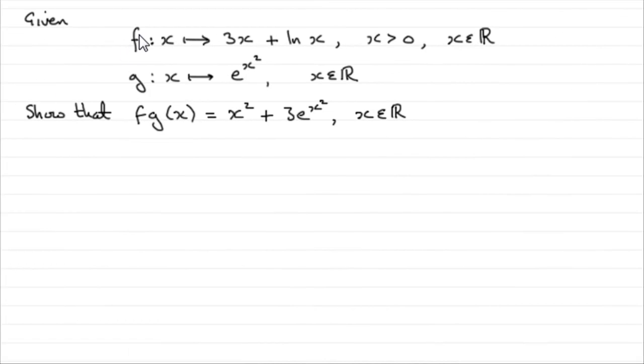Now we're given two functions f and g, where f is such that x maps onto 3x plus the natural log of x, where x is greater than zero for any real number of x.